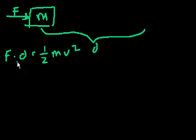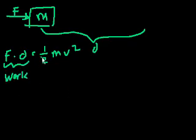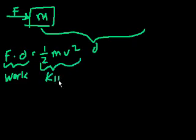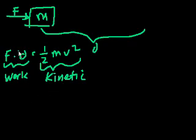We defined in that last video that force times distance, by definition, is work. And ½mv² is called kinetic energy. By definition, kinetic energy is the amount of work you need to apply to an object to get it from rest to its current velocity.